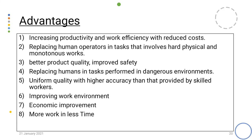Now let us discuss the advantages of automation in construction. 1. Increasing productivity and work efficiency with reduced cost. 2. Better product quality, improved safety. 3. Replacing human operators in tasks that involve hard physical and monotonous work. 4. Improving work environment. 5. Economic improvement. More work in less time. 6. Uniform quality with higher accuracy than provided by skilled workers.